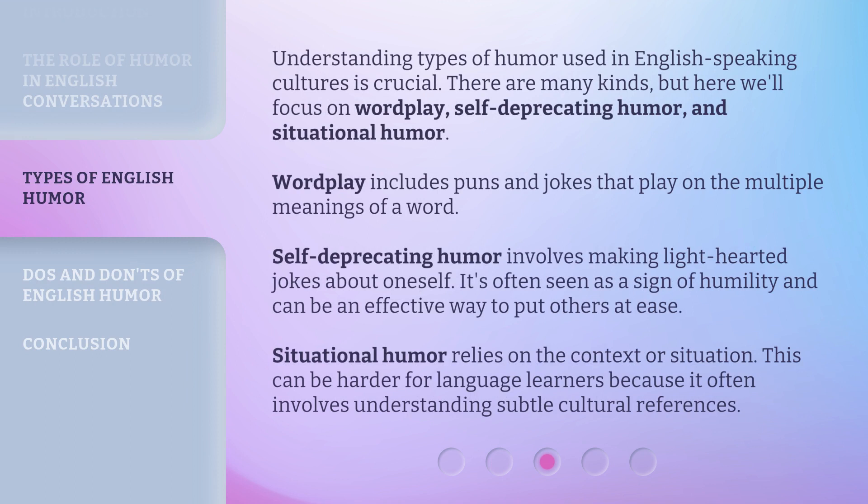Understanding types of humor used in English-speaking cultures is crucial. There are many kinds, but here we'll focus on wordplay, self-deprecating humor, and situational humor. Wordplay includes puns and jokes that play on the multiple meanings of a word. Self-deprecating humor involves making lighthearted jokes about oneself — it's often seen as a sign of humility and can be an effective way to put others at ease. Situational humor relies on the context or situation, and can be harder for language learners because it often involves understanding subtle cultural references.